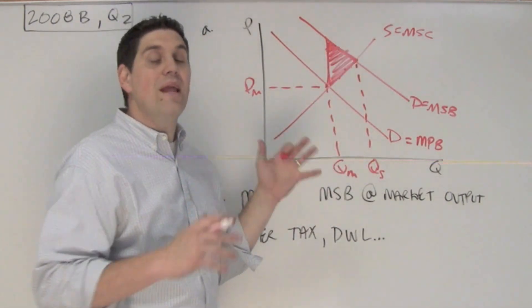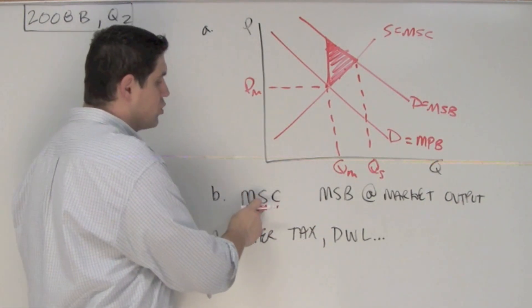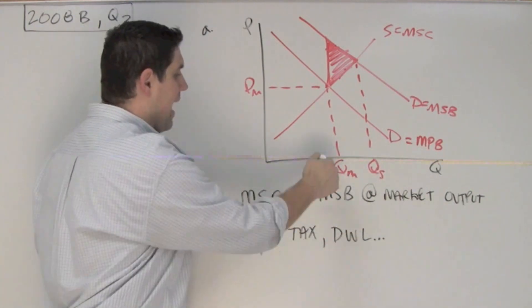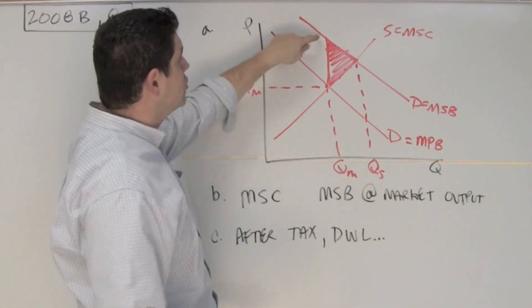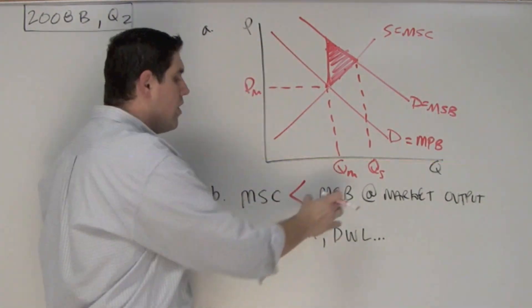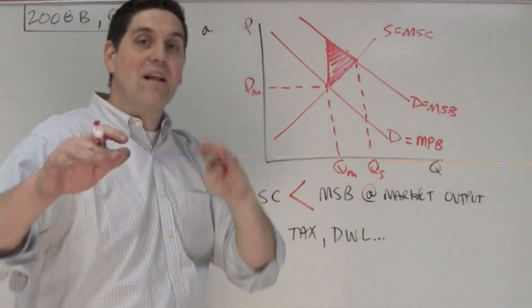Now the graph right here is worth three out of the six points in this free response. The next question asks you, what's the relationship between the marginal social cost and the marginal social benefit at the market output? So at this output, what's the relationship between the marginal social cost and the marginal social benefit? Well, the marginal social cost is less than, or the benefit to society is greater than the cost to society at the quantity free market, and that's why there's deadweight loss.